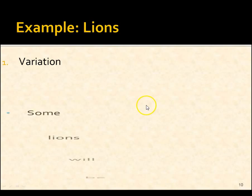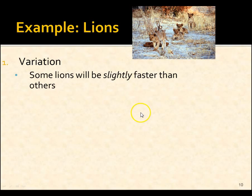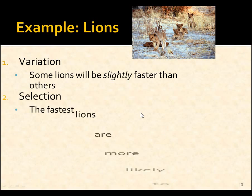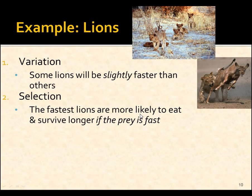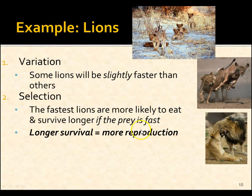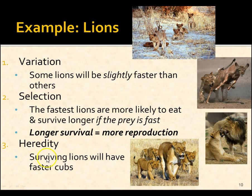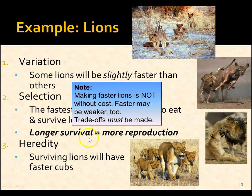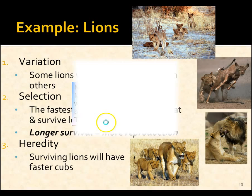Let's use an example of lions. First, there's variation — some lions will be slightly faster than others. Then selection: the fastest lions are more likely to eat, and if the prey is fast, you need fast lions. The slowest ones don't survive as well. The longer you survive, the greater your chances of reproduction. And heredity: anyone who passes on their traits has faster cubs, and that trait gets passed on. As a side note, faster lions isn't without cost — faster ones might be weaker, with fewer powerful muscles. There's no free lunch in nature.